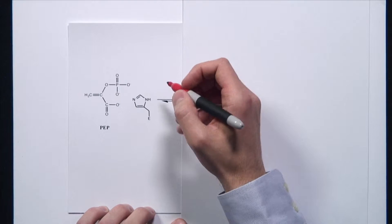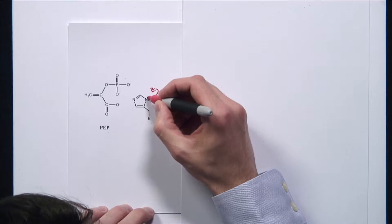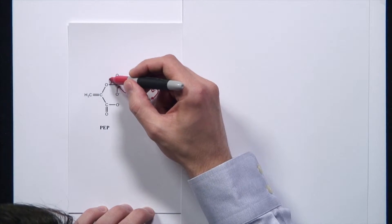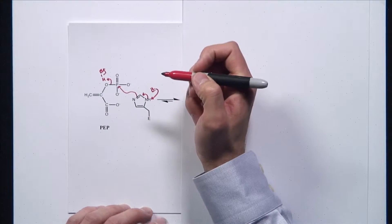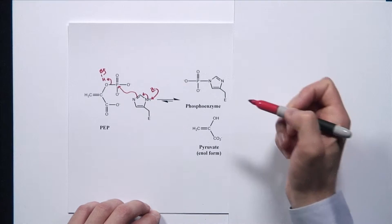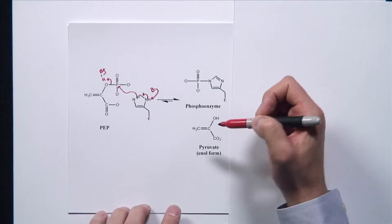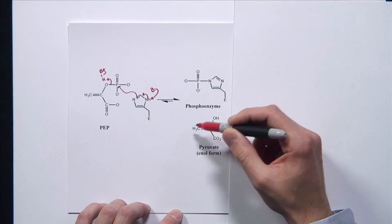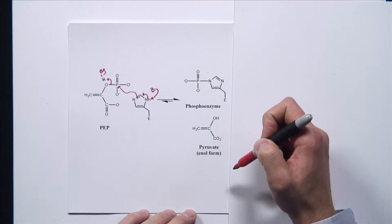The reaction starts by assuming there's a base in the active site that's going to deprotonate the histidine, which then attacks the phosphate. Finally, the phosphate group is going to leave with the assistance of a general acid. The products obtained are the phosphoenzyme, with a histidine that now has the phosphate group attached, and the enol that is released from the phosphoenolpyruvate, which is the enol form of pyruvate.